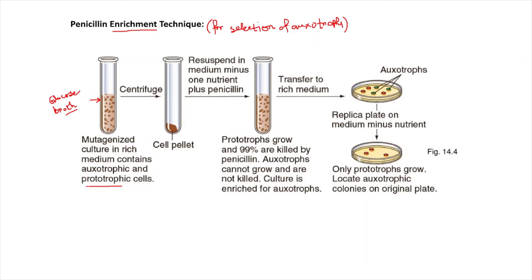Let us recapitulate: what are prototrophs? Prototrophs are those bacterial cells which can synthesize all of the nutrients required for their growth. In the case of auxotrophs, they are different from prototrophs in that they can synthesize almost all nutrients required for growth, but they are deficient in synthesizing one particular nutrient required for growth, and that is why they are called auxotrophs.